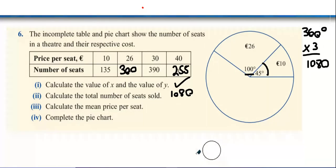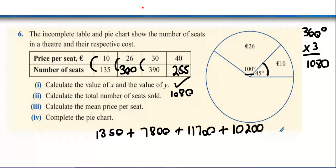Let's do this. I sold 135 10 euro seats. How much money did I make from that? I sold 26, 300 euro seats. 7,800. Is that right? Or is there more? I think it's 7,800. 300 people multiplied by 26. Gotcha. Thank you. 30 multiplied by 390. 390 seats at 30 quid each. And then finally, 255 seats sold at 40 quid each. 10,000? 200. And can you add them all together?